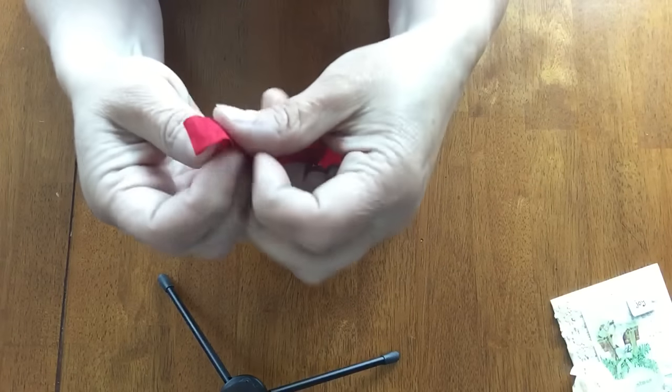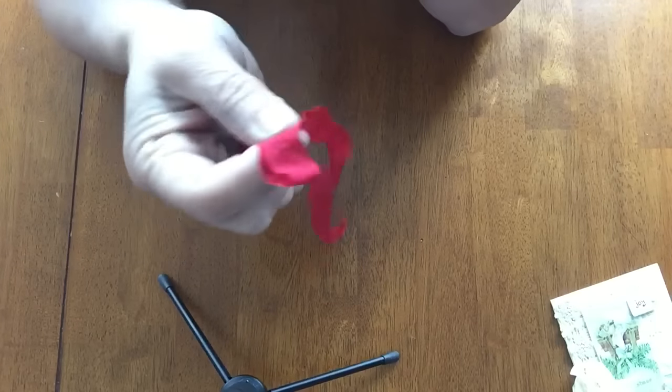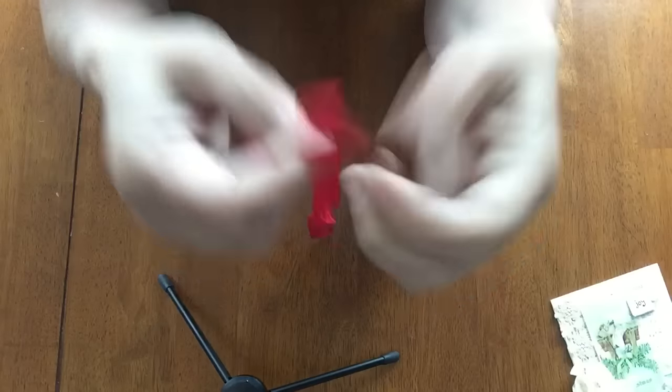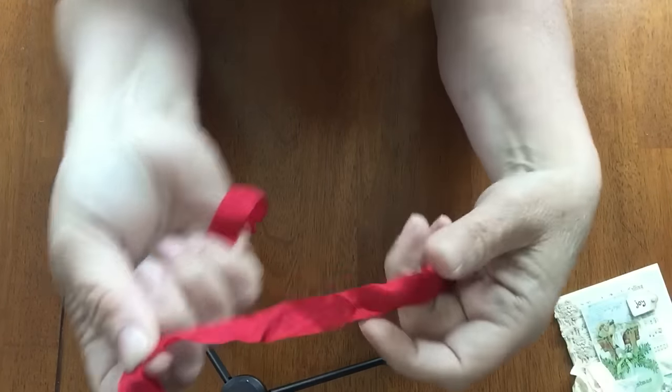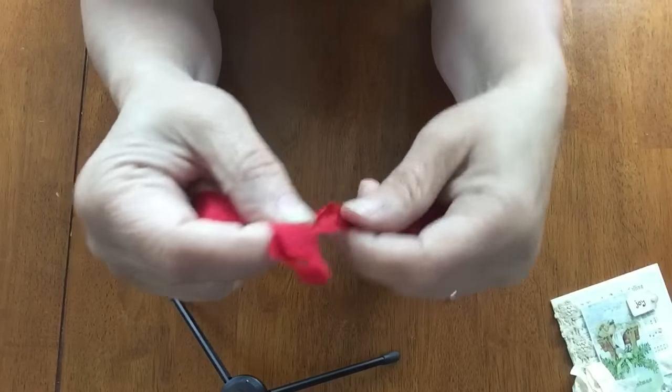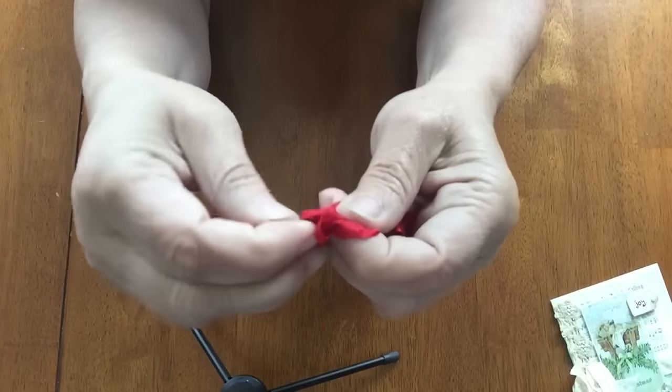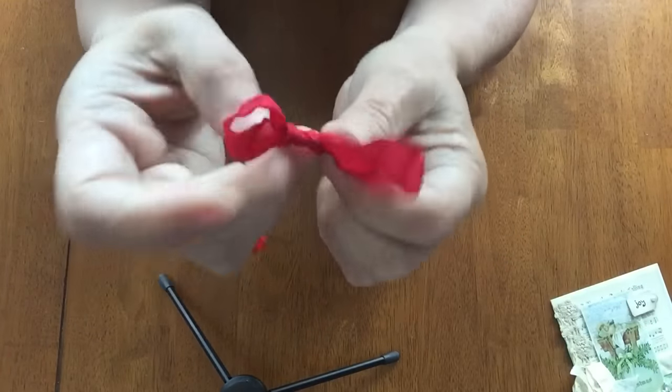And all you're going to do is make a rabbit ear. It's just like tying your shoes. That's what I tell my students. So if you can tie your shoes, you can do this unless you're a Velcro girl. Then what I do is I just kind of hold the other, the shorter side back. And I just take the long side and I go around the loop and through the hole just like you're tying your shoes. And you just pull it through like that.